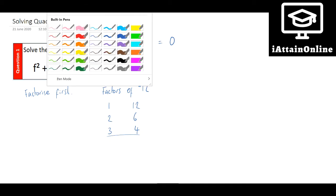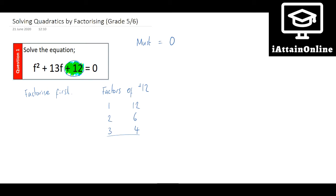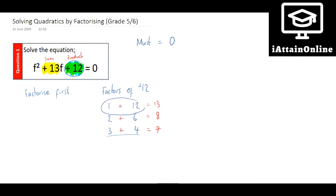Now of those, we are looking for a pair that add together to give you positive 13. So they have to have a product of positive 12 and a sum of positive 13. Going through and finding out what each of these add up to: 1+12 is positive 13, 2+6 is positive 8, 3+4 is positive 7. So this tells me that my two factors are 1 and 12.